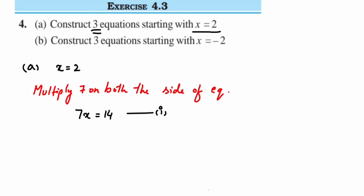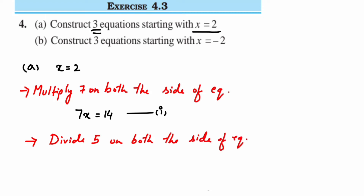Now for the second equation, instead of multiplying like I did with 7, you can also divide. Let me take 5 and divide both sides of the equation by 5. That gives us x/5 = 2/5. This is my second equation — it's very simple.